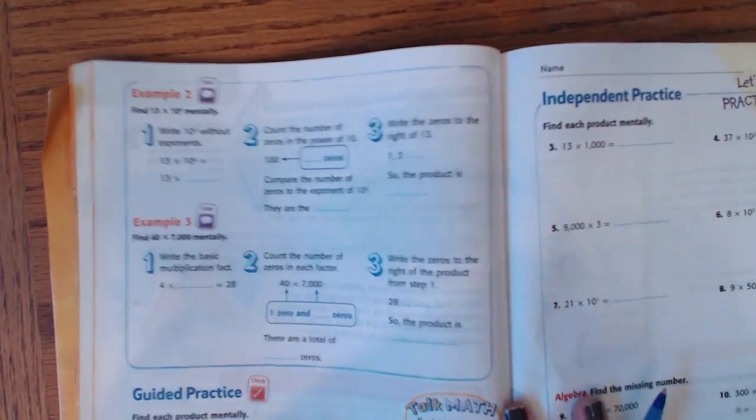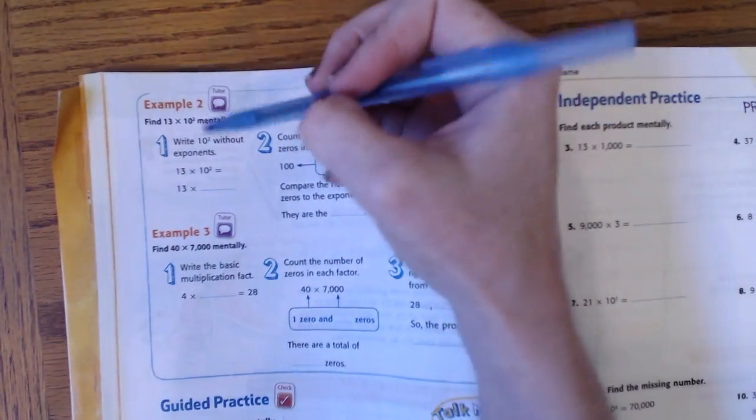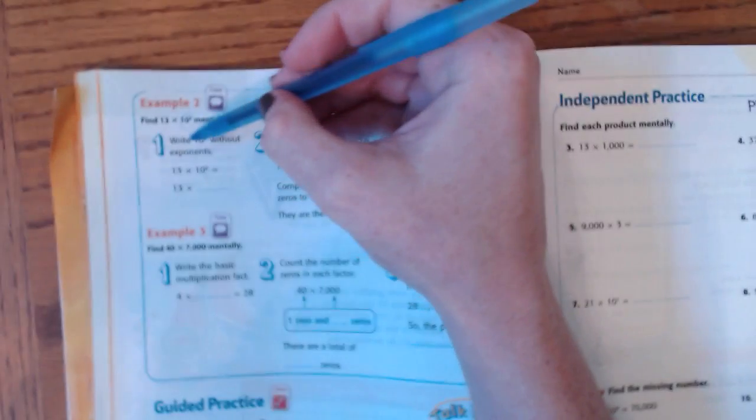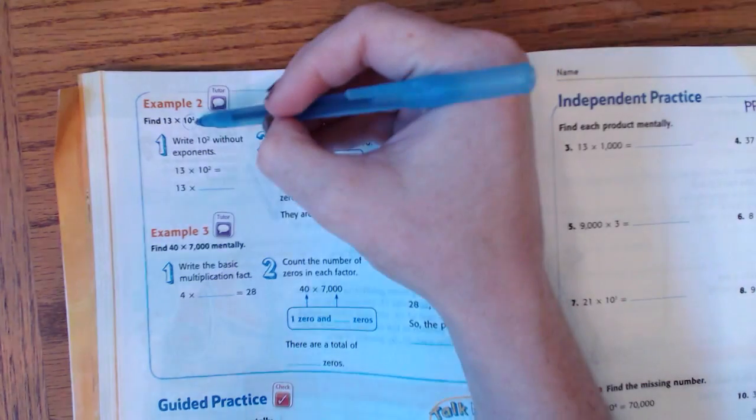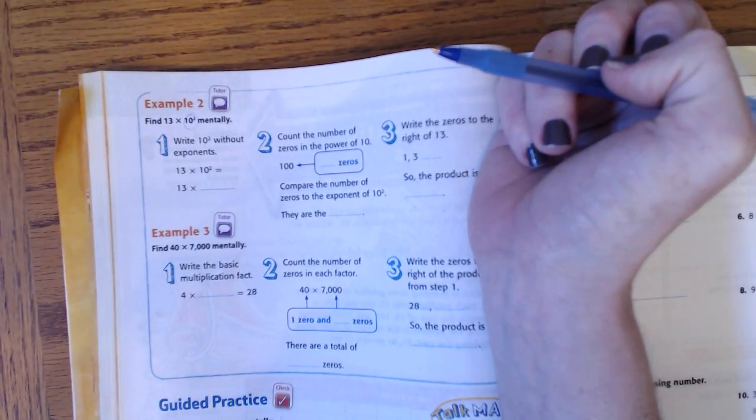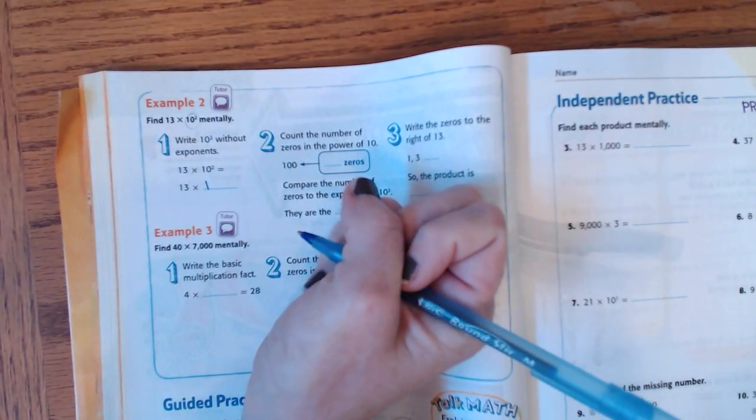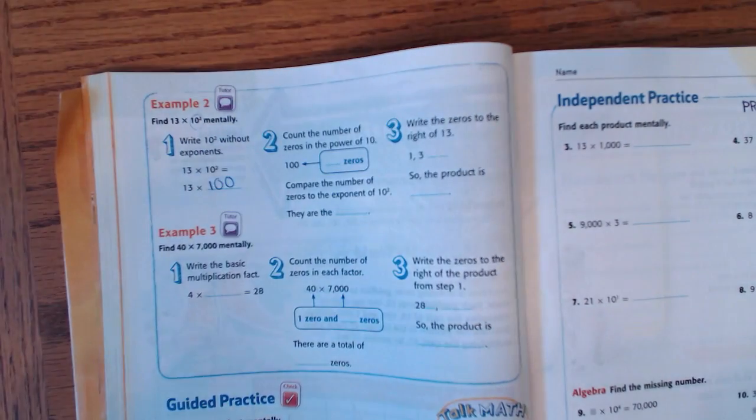All right, so it asks you here to calculate this mentally, and you can. You just have to look at the number right here. Write 10 to the second power without exponents. So all you need to do is look at that number in the corner. That number is a 2. That means that this 1 is going to have two zeros.